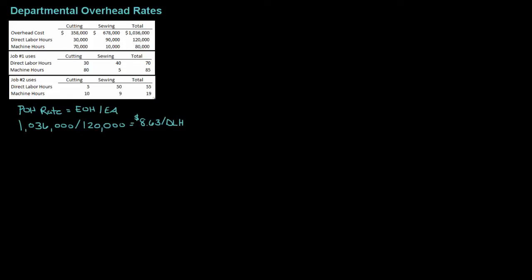Let's also calculate based on machine hours: $1,036,000 divided by total machine hours of 80,000, and that equals $12.95 per machine hour. Notice that's a huge difference between the two rates, and we're going to see as we go through the calculations that this causes skew in our jobs.